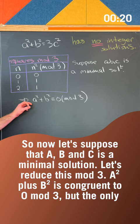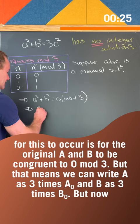But the only way for this to occur is for the original a and b to be congruent to 0 mod 3. But that means we can write a as 3 times a naught and b as 3 times b naught.